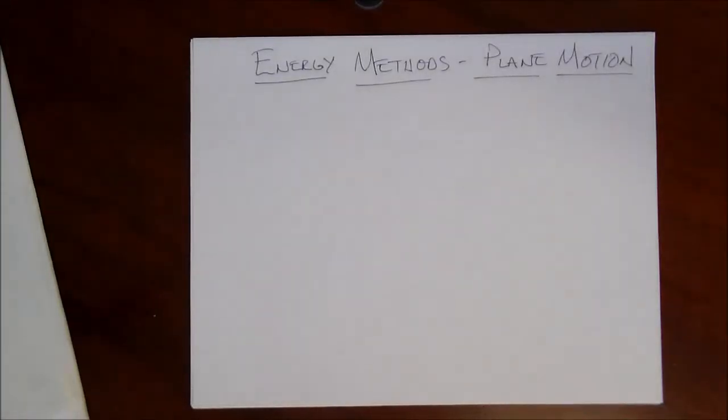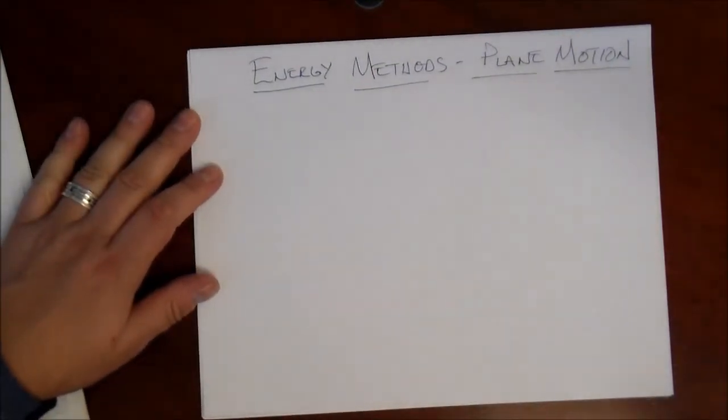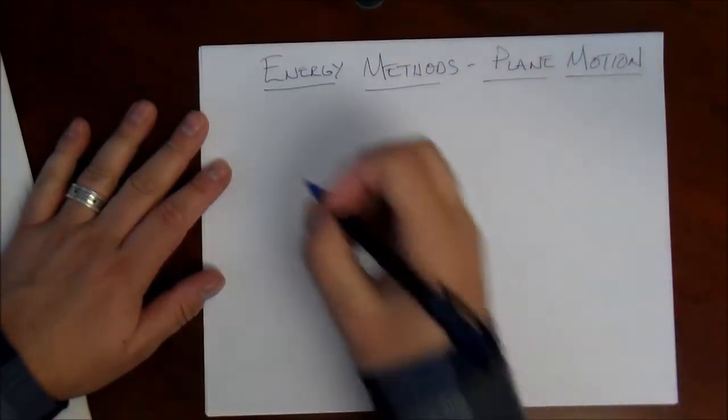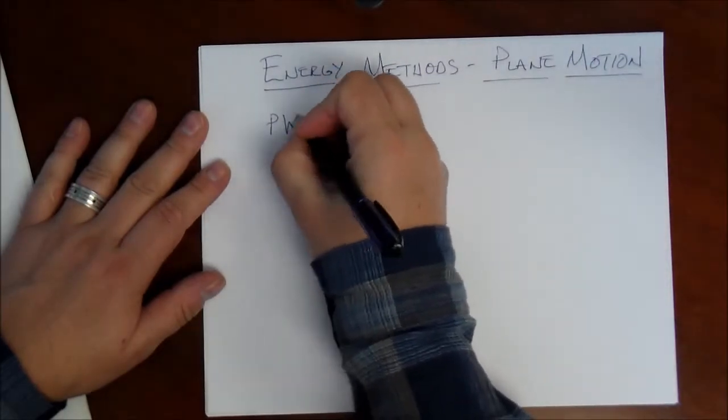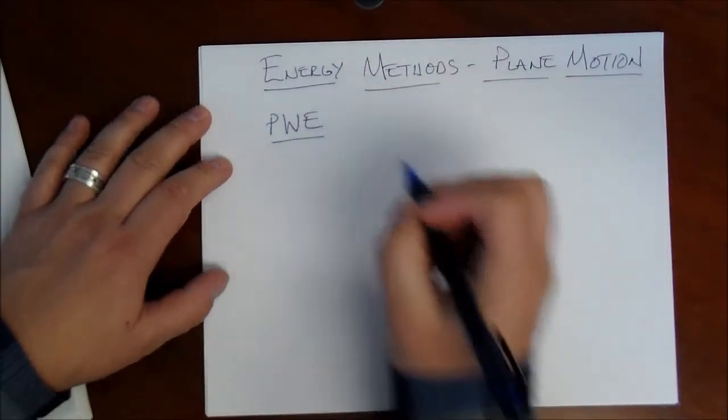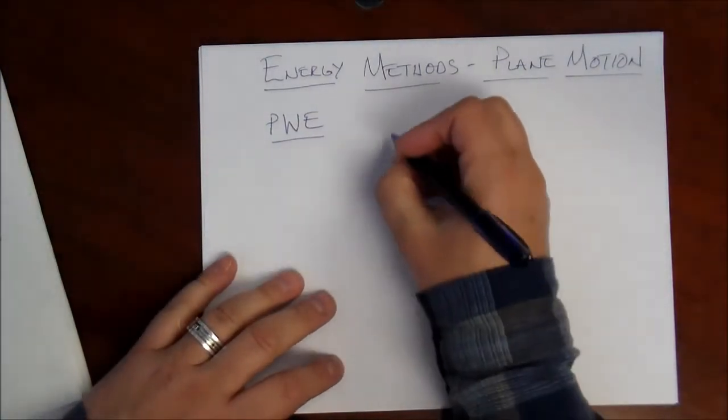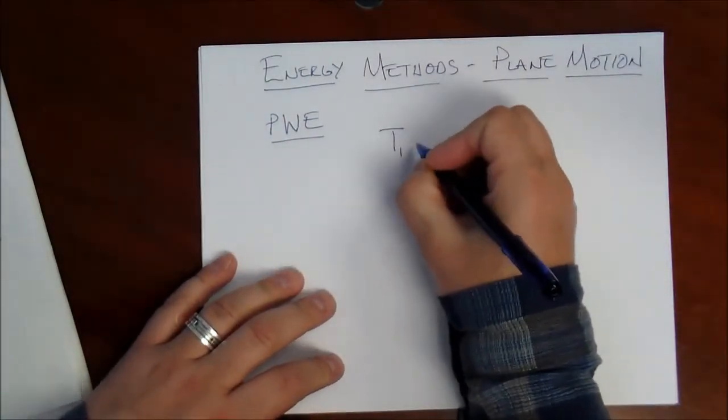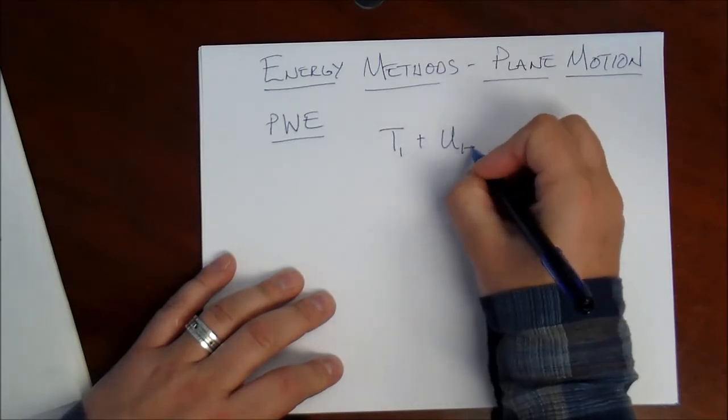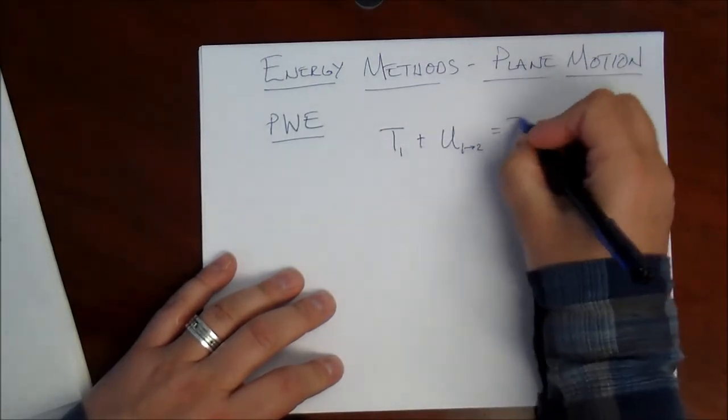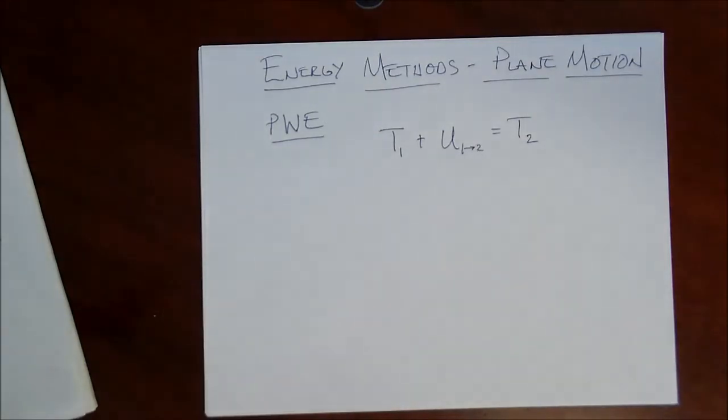The next topic concerns energy methods in plane motion for rigid bodies. This is really about the principle of work and energy, as we've seen before for particles. And the statement is exactly the same. The initial kinetic energy plus the work done in the process is equal to the final kinetic energy. So the statement of work and energy is the same for rigid bodies as it is for particles.